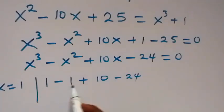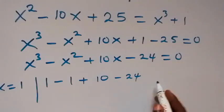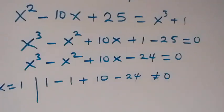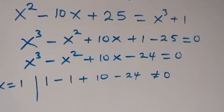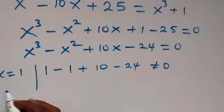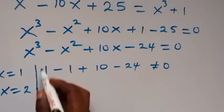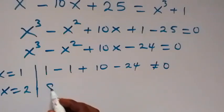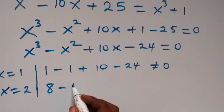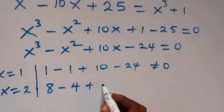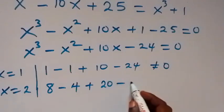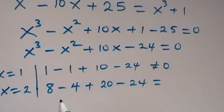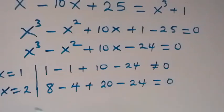So here: 1 minus 1 is 0, then 10 minus 24 is minus 14 — this is not equal to zero. That means x equals 1 is not a root. Let's test x equals 2: 2 cubed is 8, minus 2 squared is 4, plus 10 times 2 is 20, minus 24. That gives 4 plus 20 minus 24 equals 0. So 2 is a root of this polynomial.